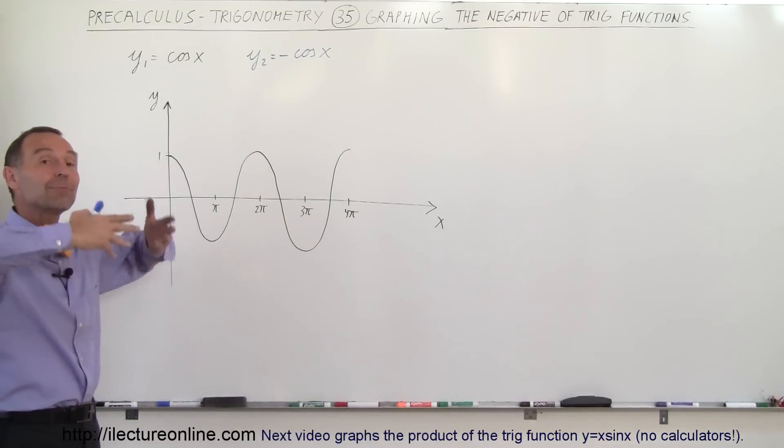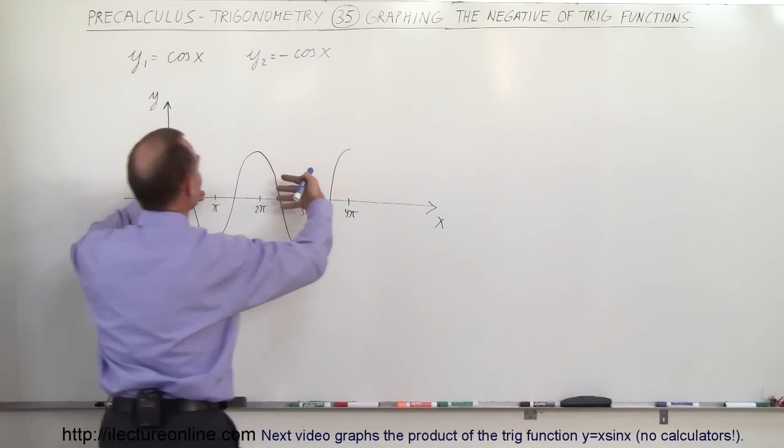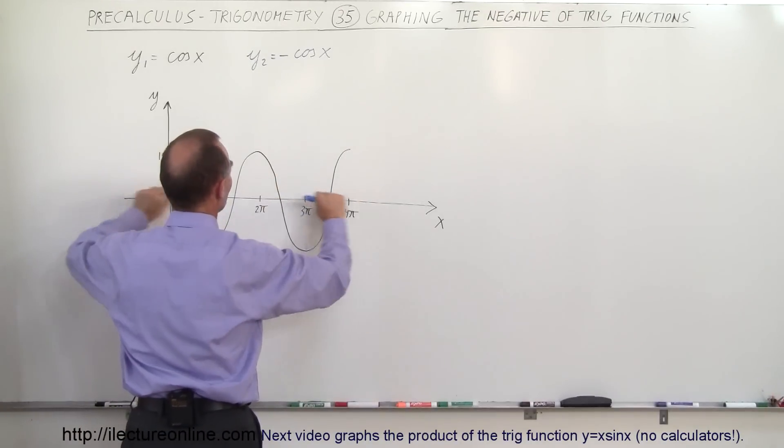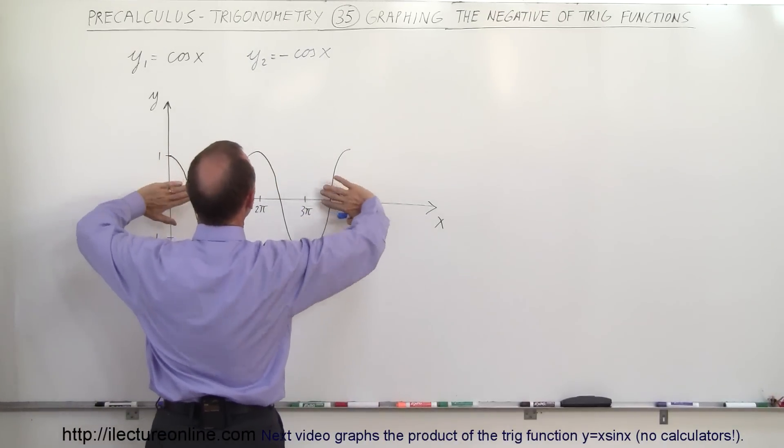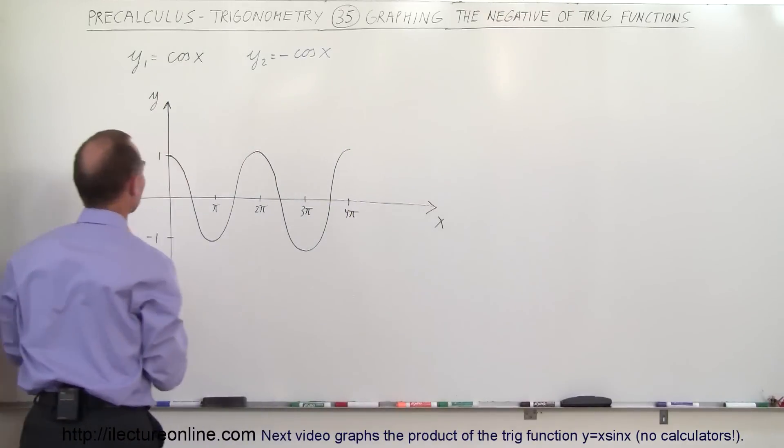How do you do that? We simply flip the function over. It's like taking this thing, if you had this on a skewer so to speak, you could simply flip this thing over like that. That would give you the negative of the function.